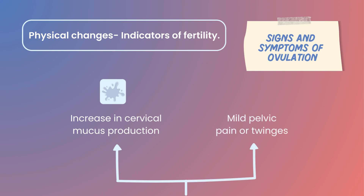Additionally, some women may experience mild pelvic pain or twinges on one side of the lower abdomen, known as mittelschmerz, further signaling ovulation.